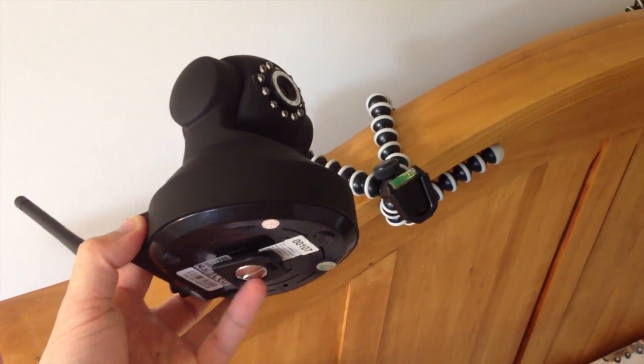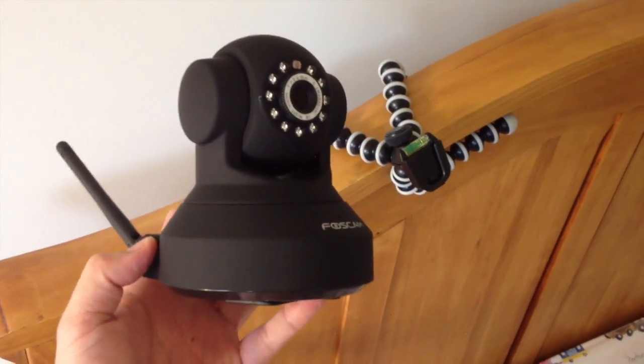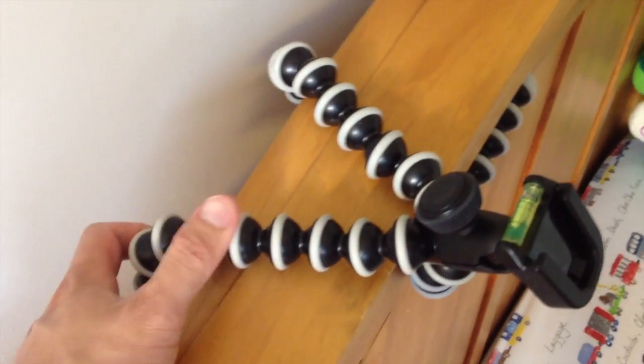I screwed this part in, the quick release mount to the Foscam, so now with this Gorillapod Hybrid, it easily just clamped on to the side of the crib.